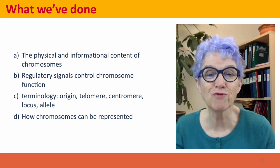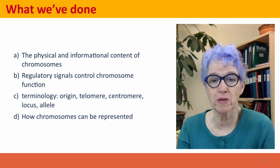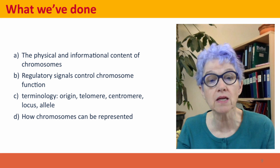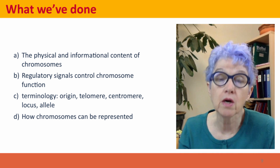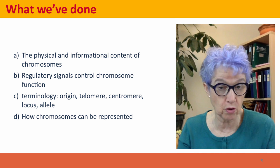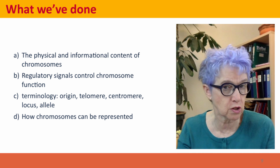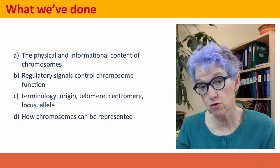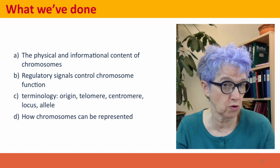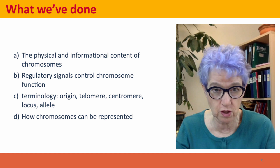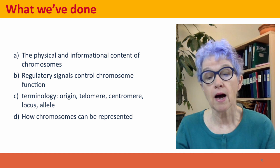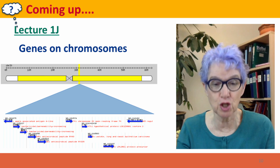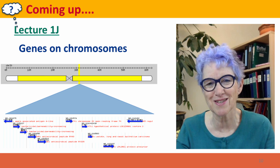So what have we done? We've talked about the physical and informational content of chromosomes. We've talked about the key regulatory signals that control how chromosomes function — origins, telomeres, and centromeres. We've introduced new terminology for dealing with different versions of genes: locus and allele. And we've talked about how chromosomes can be represented. Coming up next, we're going to talk about the genes on the chromosomes. I hope to see you there.